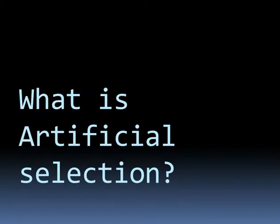So, what is artificial selection? Artificial selection is a process of breeding animals and plants with other individuals that have desirable traits and characteristics. Darwin knew that this process was used for many years by humans to create offspring of animals and plants in hope that they would have the same desirable traits.